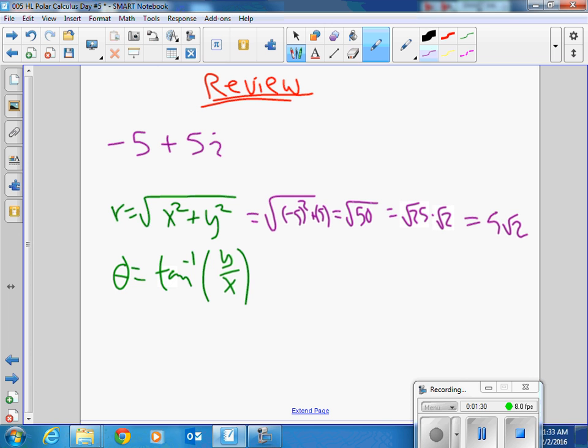Then inverse tangent. So what we'll do is the inverse tangent of 5, right? This is x and this is y, 5 over negative 5. So the inverse tangent of negative 1 is negative pi over 4. That's wrong. Right?